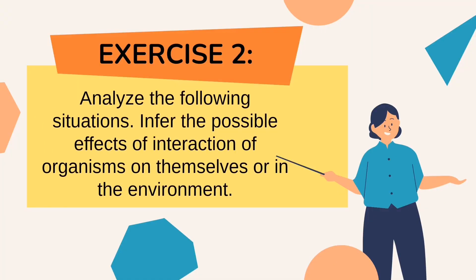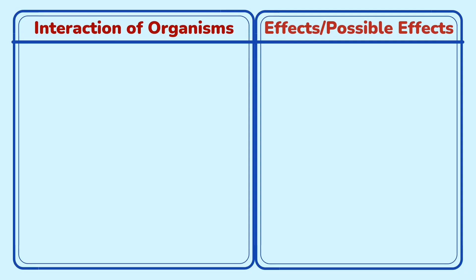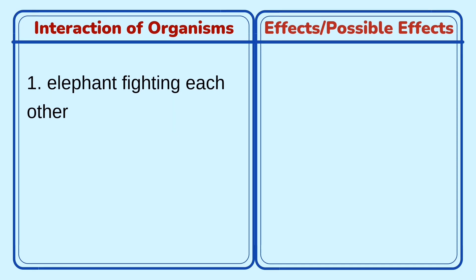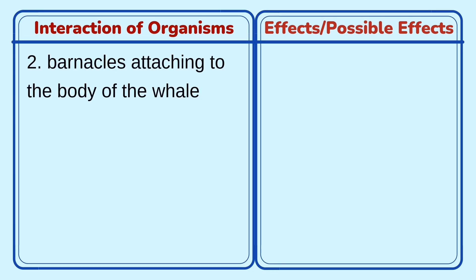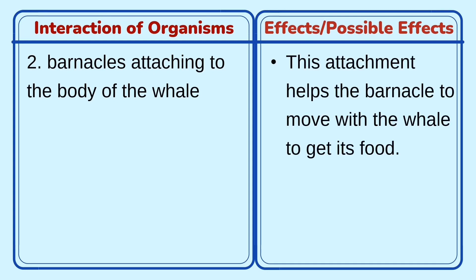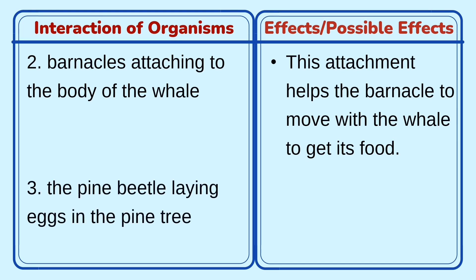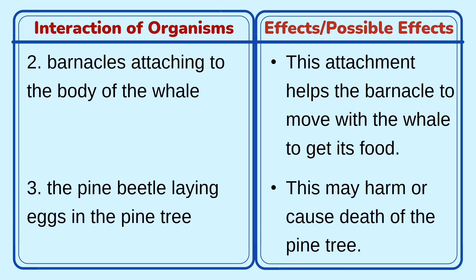Now let's have exercise two. Analyze the following situations, then infer the possible effects of the interaction of organisms on themselves or in the environment. First — elephants fighting each other. The possible effect is that elephants are harmed or badly affected in the fight, which may cause the death of some elephants. Second — barnacles attaching to the body of a whale. This attachment helps the barnacle move with the whale to get its food. Third — a pine beetle laying eggs in a pine tree. The possible effect is that this may harm or cause the death of the pine tree.